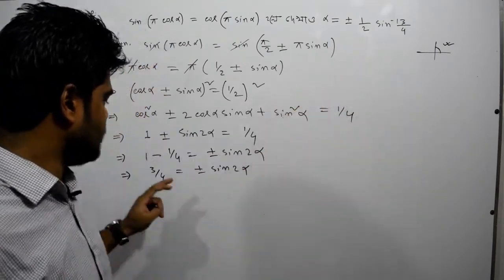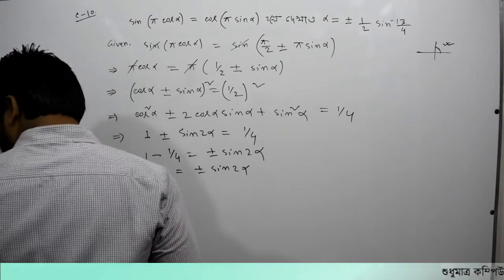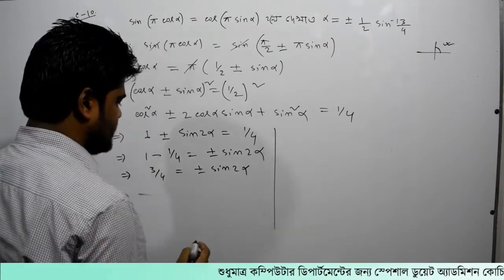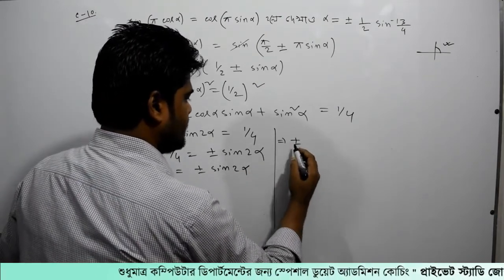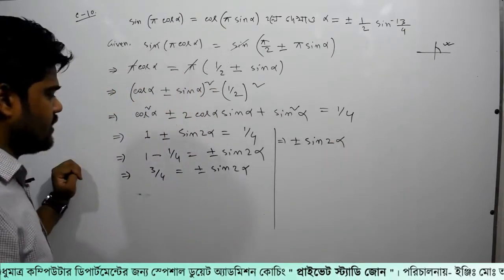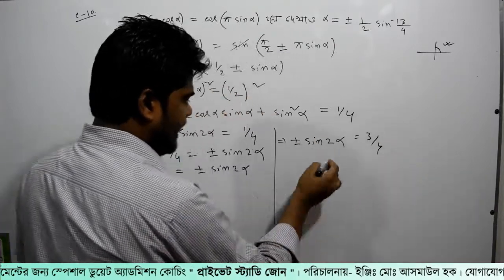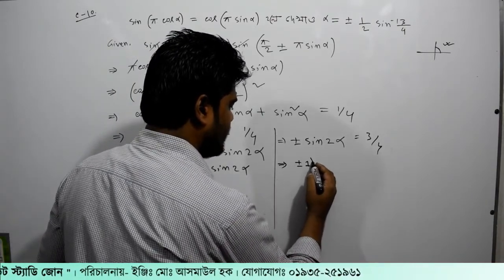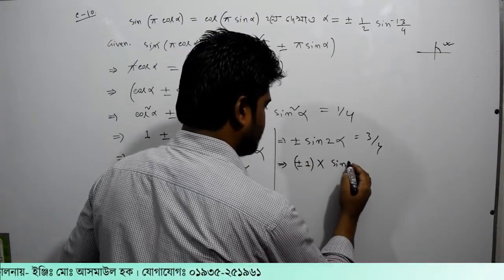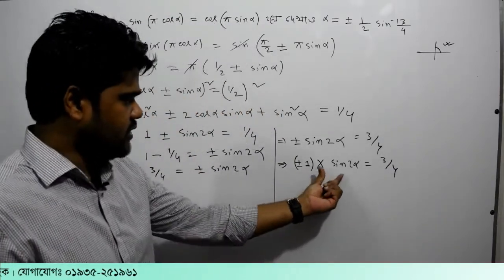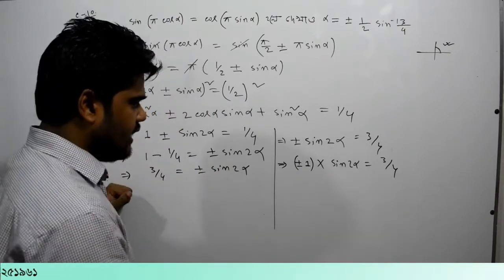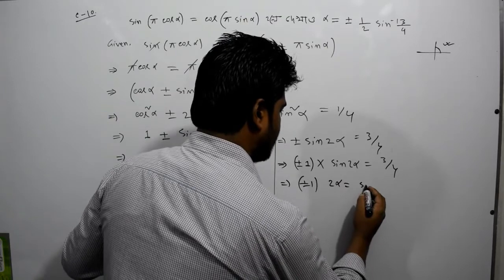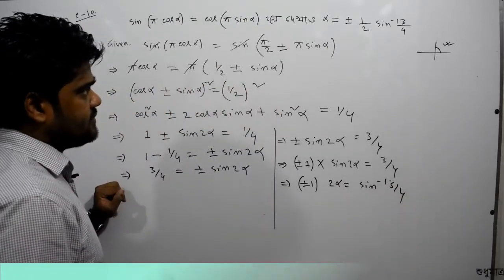The first one is going to be done. So I will keep the first one, and I will write the second one. Plus minus sin 2 alpha, and the answer is 3 by 4. So the answer is 3 by 4, plus minus 1 — sin 2 alpha — so the answer is 1 plus minus 1, which would be the same. So the answer is 3 by 4 plus minus sin 2 alpha.